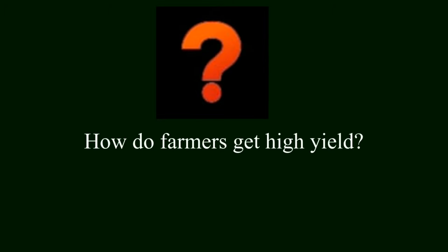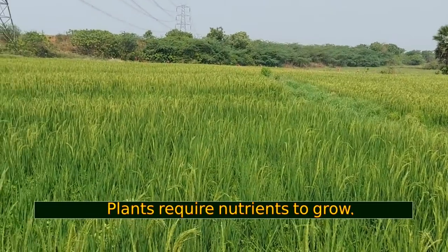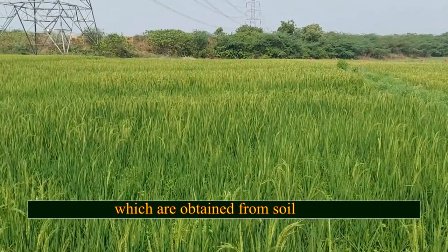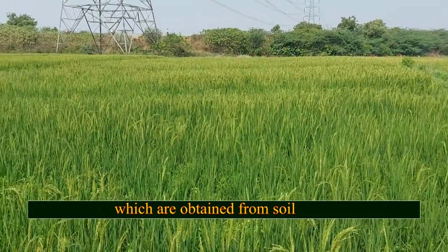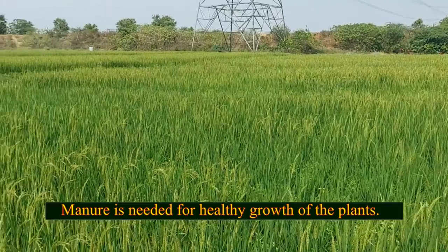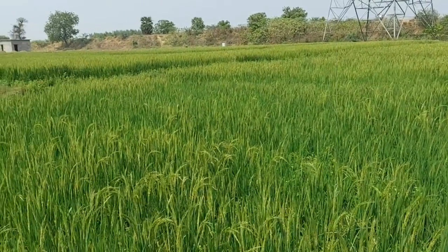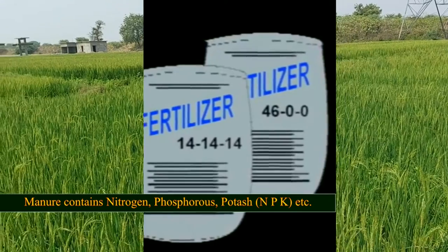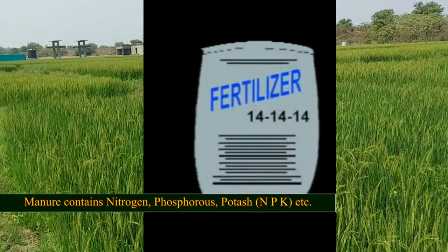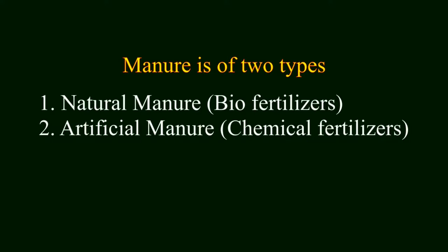How do farmers get high yield? Plants require nutrients to grow, which are obtained from soil. Manure is needed for healthy growth of plants. Manure contains nitrogen, phosphorus, and potassium (NPK). Manure is of two types: natural manure, also known as biofertilizers, and artificial manure, also known as chemical fertilizers.